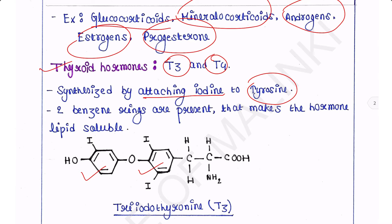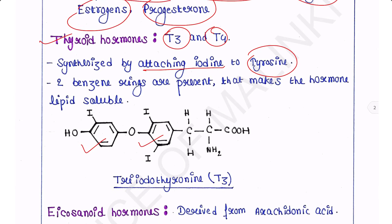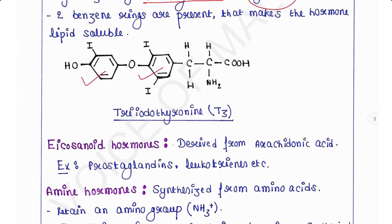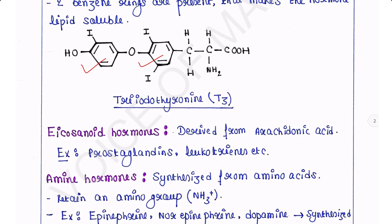The eicosanoid hormones are basically derived from arachidonic acid. Examples include prostaglandins, leukotrienes, etc.